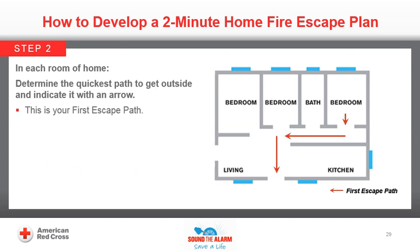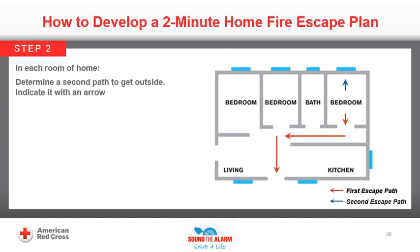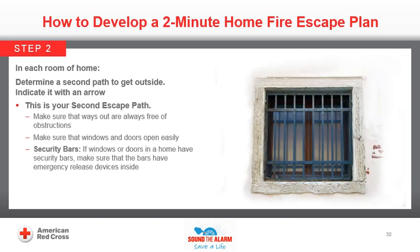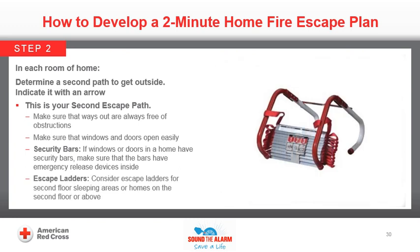Step 2: In each room of home, determine the quickest path to get outside and indicate it with an arrow — this is your first escape path. Determine a second path to get outside from each room — this is your second escape path. Make sure that ways out are always free of obstructions including furniture and equipment. Make sure that windows and doors open easily allowing for quick escape. If windows or doors have security bars, make sure the bars have emergency release devices inside. Consider escape ladders for second-floor sleeping areas or homes on the second floor or above — learn how to use them and store them near the window.